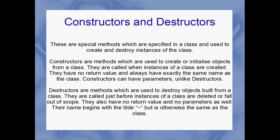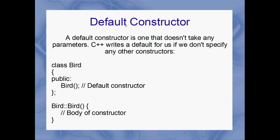Destructor names begin with a tilde, but otherwise it's exactly the same name as the class. The default constructor — probably the most basic constructor of all — is a constructor that takes no parameters. So right here I've got a class called Bird, and it's got a default constructor specified. We know that it's a default constructor because it's got exactly the same name as the class, no tilde at the start, and it takes no parameters. I've actually specified the body down here, and it does absolutely nothing.